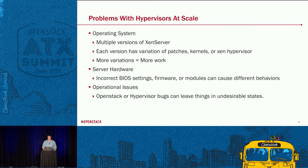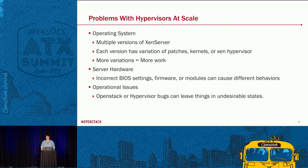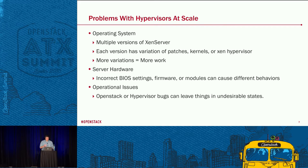Some of the problems we had with hypervisors at scale: we have multiple versions of Xen Server. We launched in 2012, so over time new versions came out with a lot of performance optimizations, different patch sets, security fixes, and kernels that need patching. There were a lot of Xen vulnerabilities the last few years — the more versions you have, the more work. On the server hardware side, there are incorrect BIOS settings and firmware from the factory, and old servers that never got updates. And operationally, OpenStack and hypervisor bugs can leave things in an undesirable state.